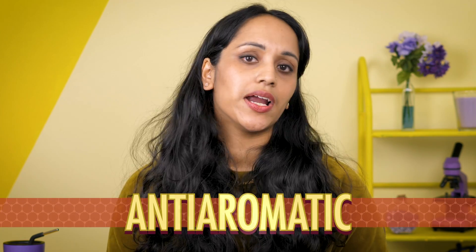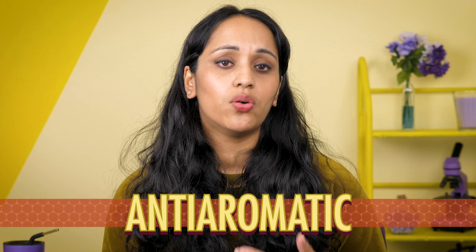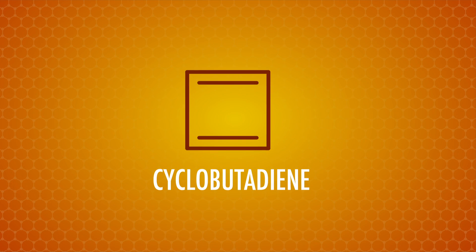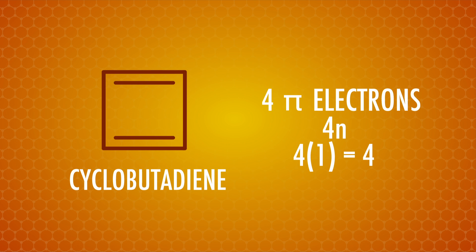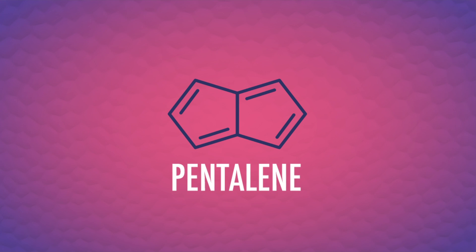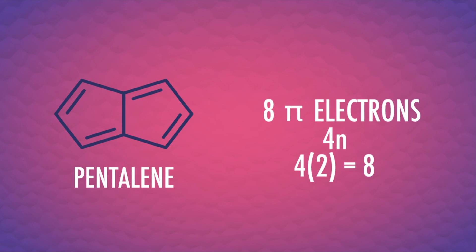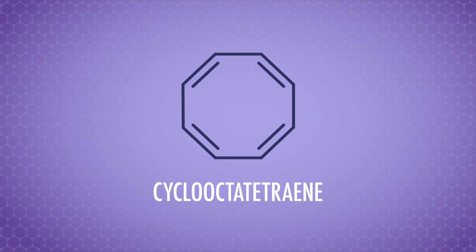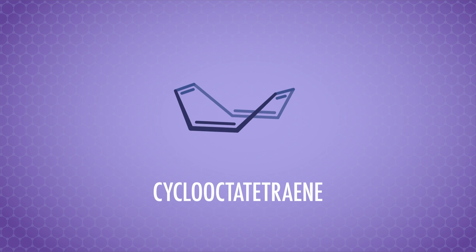These are anti-aromatic compounds, and they tend to be very unstable with 4n electrons, where n is still an integer. One anti-aromatic example is cyclobutadiene, with 4 pi electrons. Or there's pentalene, which looks a little bit like naphthalene, but it has 8 pi electrons. And while cyclooctatetraene gets close to being anti-aromatic because it's cyclic and has 8 pi electrons, it's not planar — because it's large enough to bend, it adopts a tub shape to avoid anti-aromaticity.